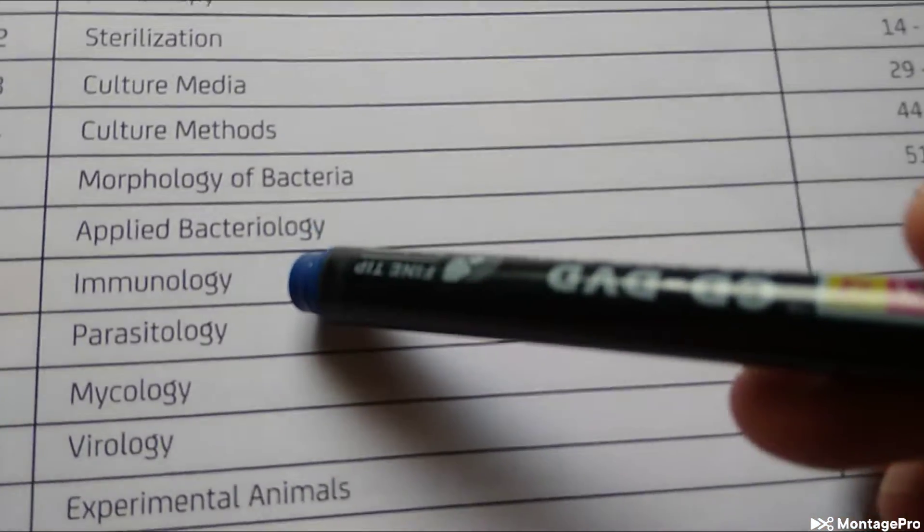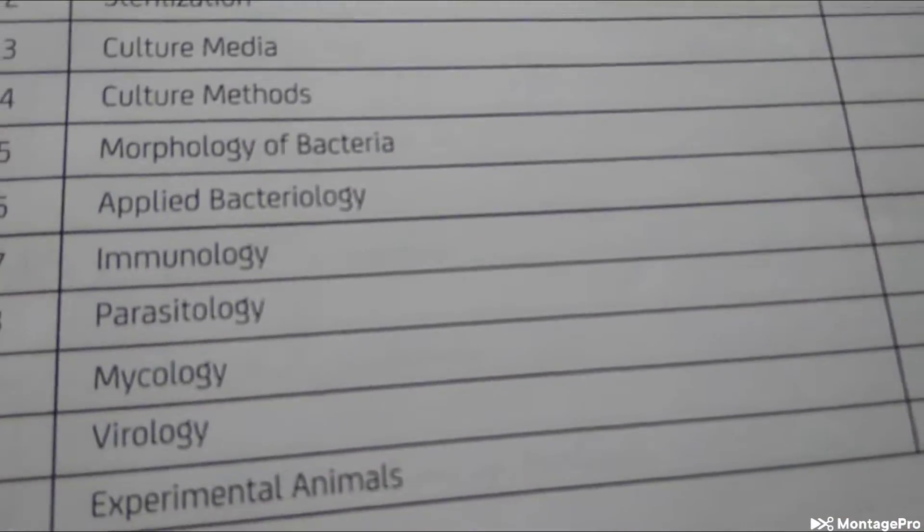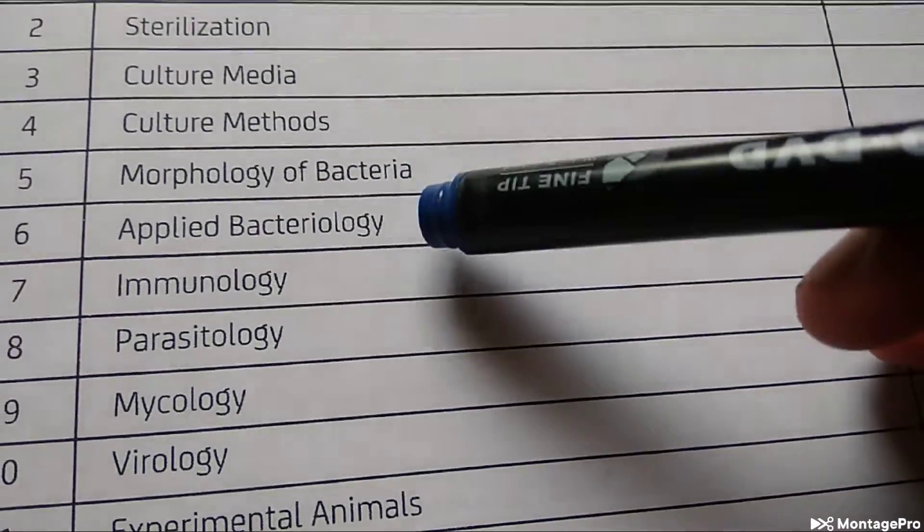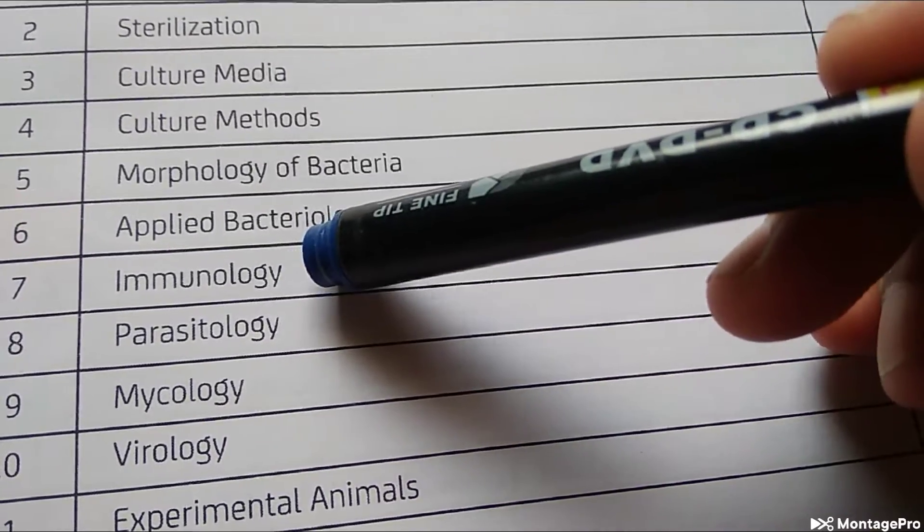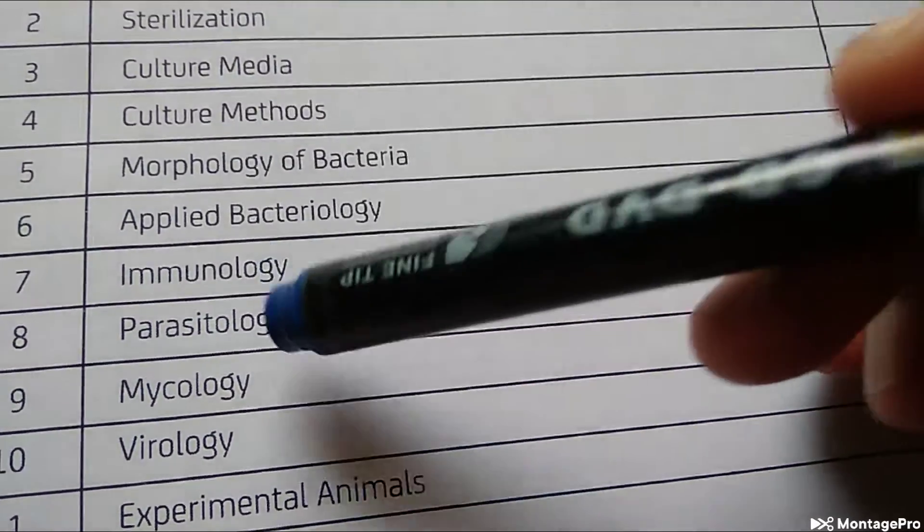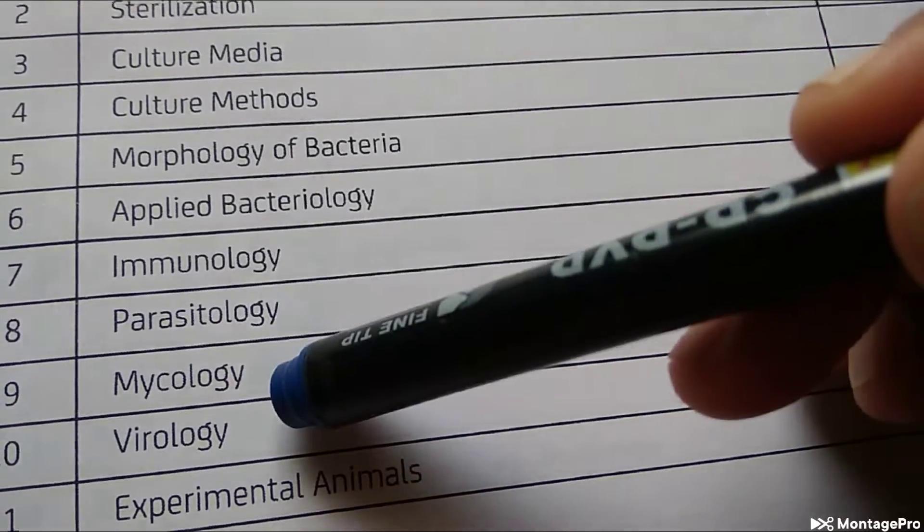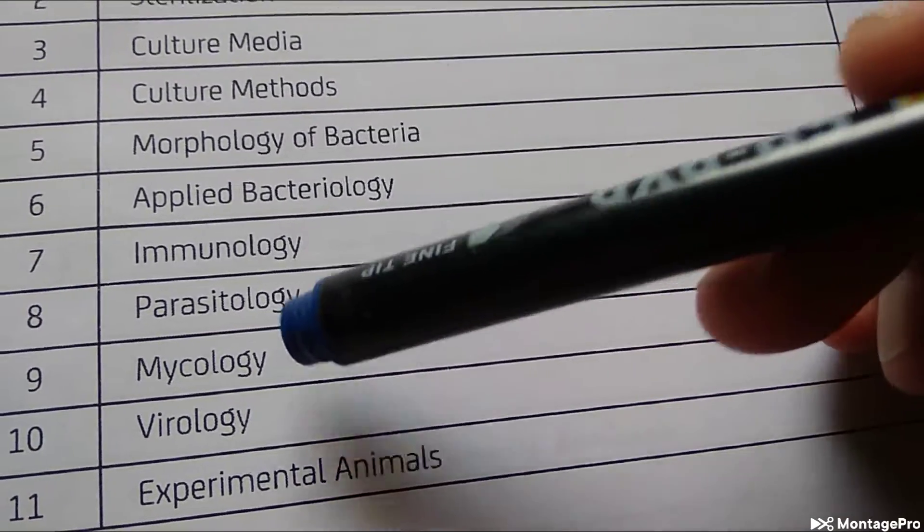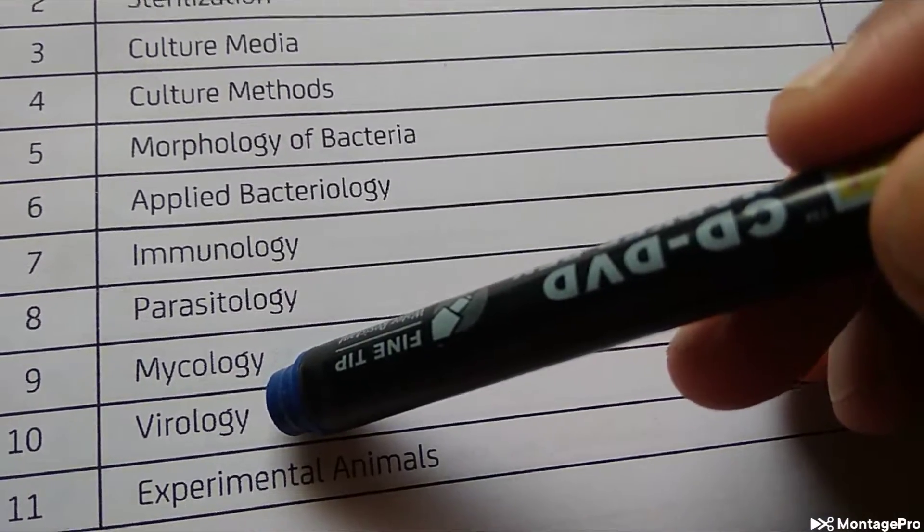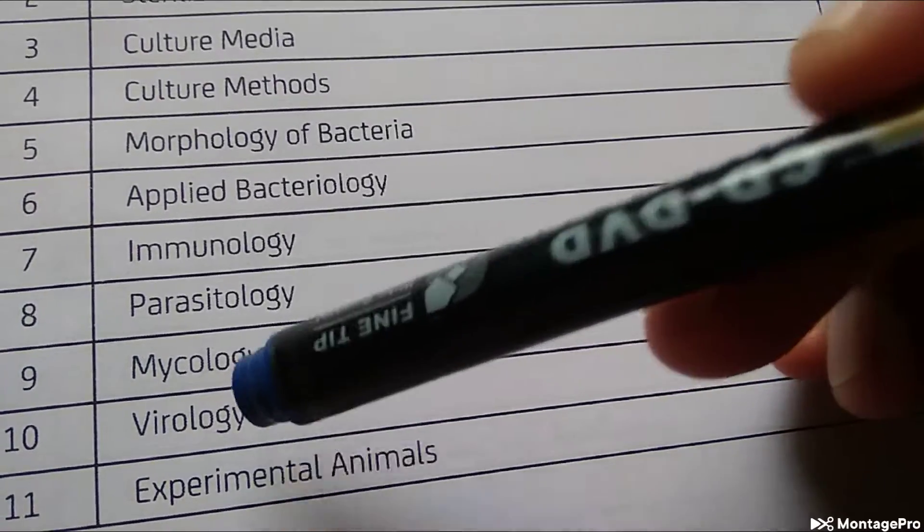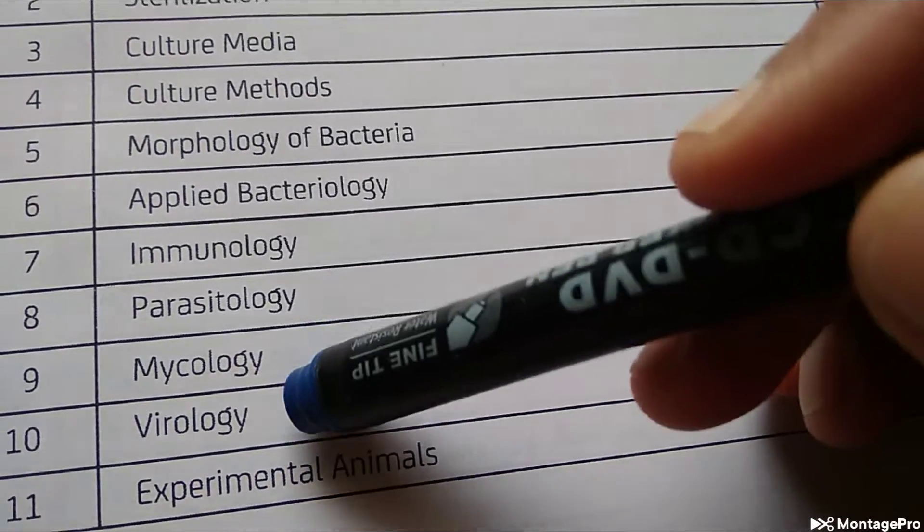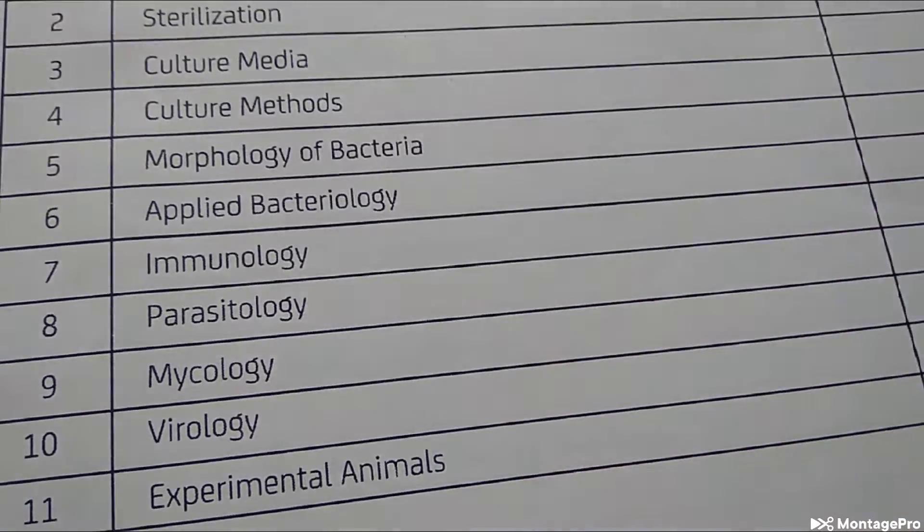Then basically they will talk to you about Ziehl-Neelsen stain for my tuberculosis, immunology with all your antigen-antibody reactions, parasitology where you'll be able to identify cysts and worms, mycology to identify fungus and hyphae, virology, and experimental animals.